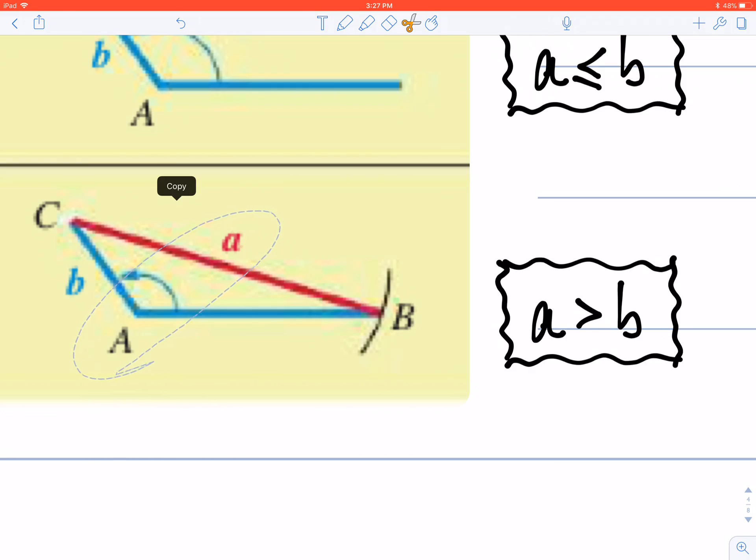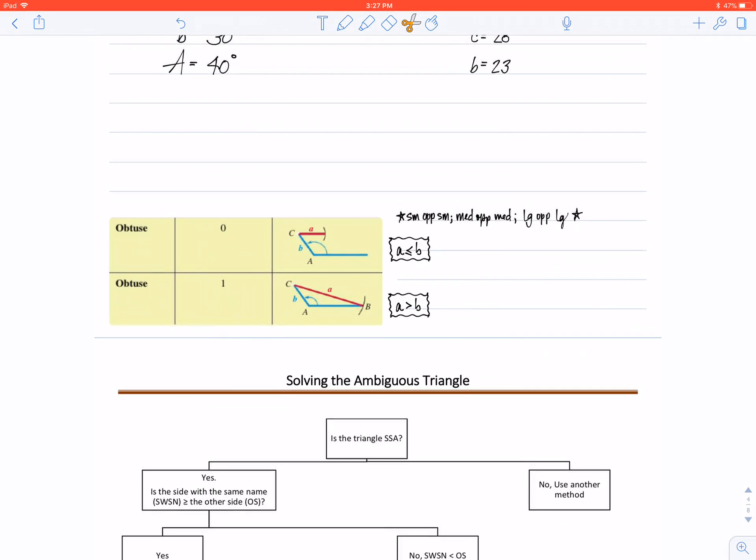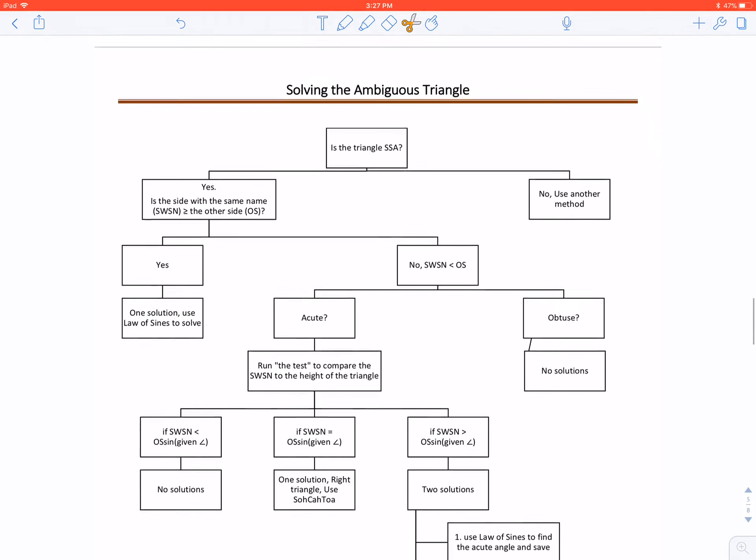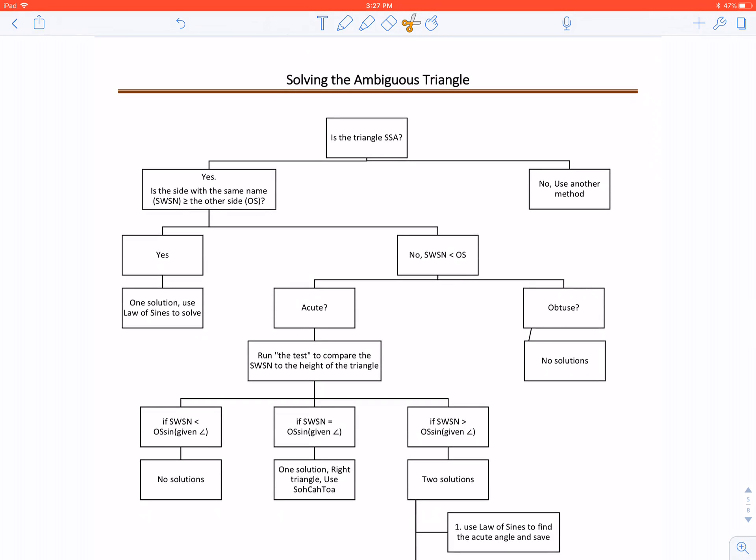The second one simply says if side a is the longest side and it's opposite the obtuse angle, then I'm going to have one solution and I'll just use the law of sines to solve that one solution. So we have either zero solutions or one solution either way. In class, I will teach you how to use the flow chart, and I think it's going to be pretty easy for you once you have that flow chart.